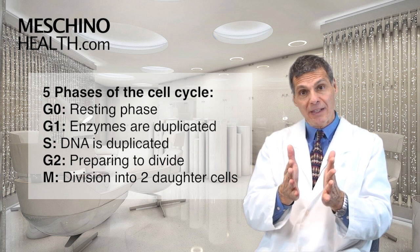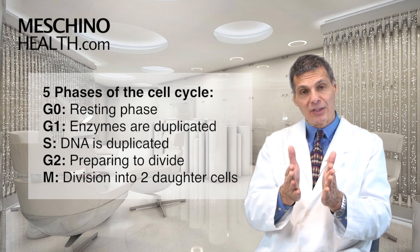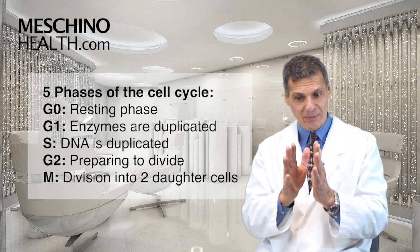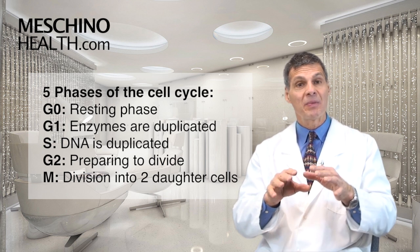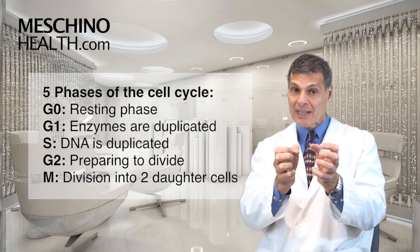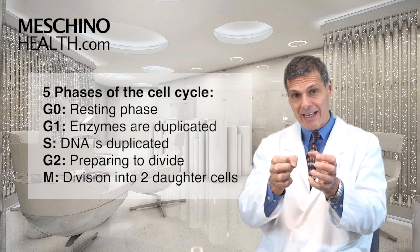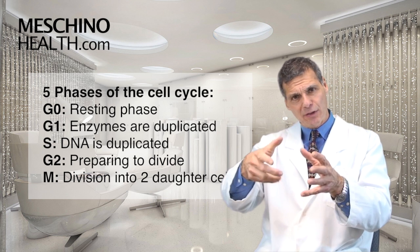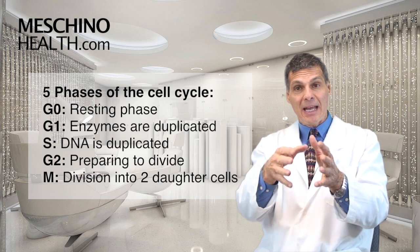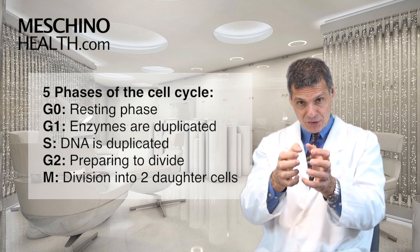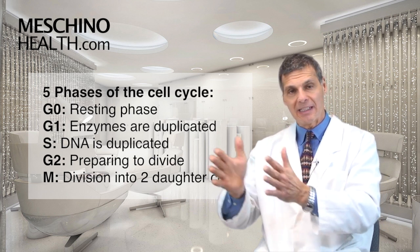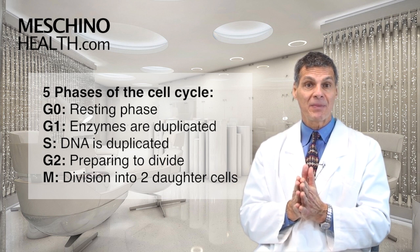After the S phase, cells go into the G2 phase. That's a checkpoint phase where the cell stops and checks: did I duplicate my DNA perfectly? In a healthy cell, if that didn't happen, it'll try to fix the mistake if it can. Cancer cells do the same — they want to make sure they can keep replicating their DNA so they can keep making new cells in the future.